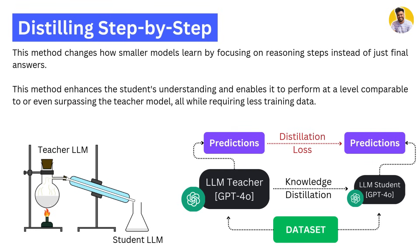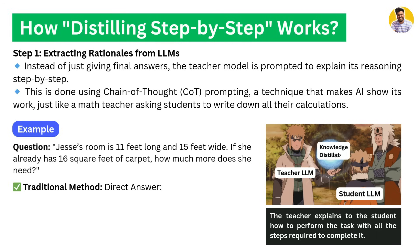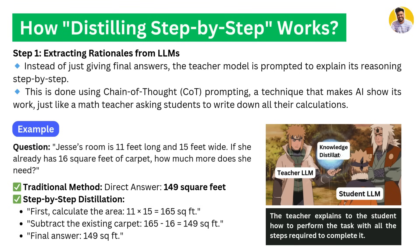Now let's move to the working of this distilling step-by-step process. In step one, we extract rationales from the teacher language model — that means the reasoning behind the answers. Instead of giving the final answer, the teacher model is prompted to explain its reasoning step-by-step using chain-of-thought prompting, a technique that makes the AI show its work just like a math teacher. For example, given that Jessie's room is 11 feet long and 15 feet wide, and she already has 16 square feet of carpet, the traditional method gives the direct answer of 149 square feet. But with step-by-step distillation, it first calculates the area, then subtracts the existing carpet area, then gives the final answer.